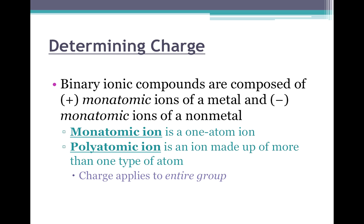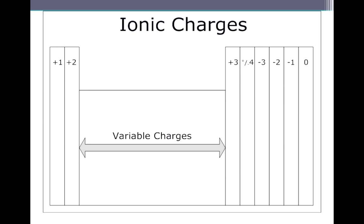Poly means many, so a polyatomic ion is made up of more than one type of atom. You're going to have two capital letters and can have a series of different subscripts — at least two capital letters make up a polyatomic ion. Remember that the charge of a polyatomic ion applies to the entire group.